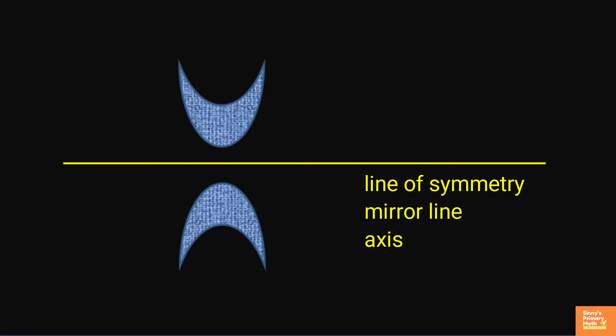A reflection flips all the points in the plane over a line. An imaginary line along which the shape can be divided to obtain the equal halves is called the line of symmetry, mirror line or an axis of symmetry.